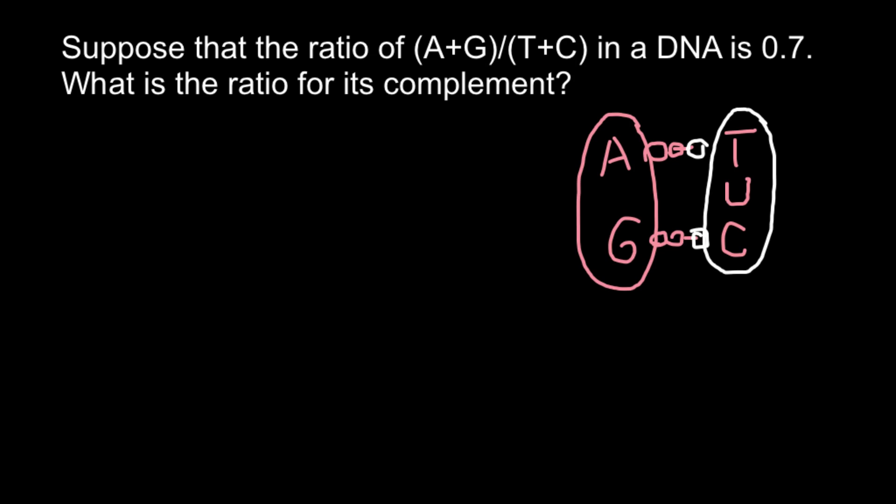Now we can return to our problem. Basically, as you see, we have the ratio here - ratio of purines to pyrimidines. So we can also say that here we have X and Y. Or if we rearrange this formula, we can get X divided by Y equals 0.7.